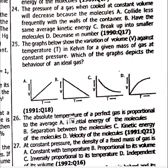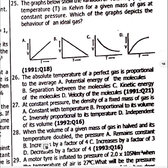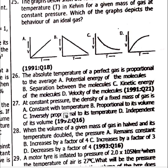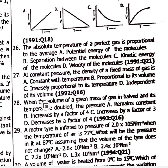Question 26: The absolute temperature of a perfect gas is proportional to the average kinetic energy of the molecules — option C. Question 27: At constant pressure, the density of a fixed mass of gas is inversely proportional to its temperature.